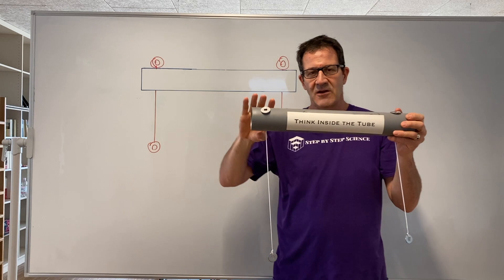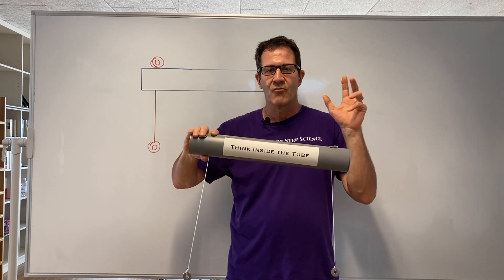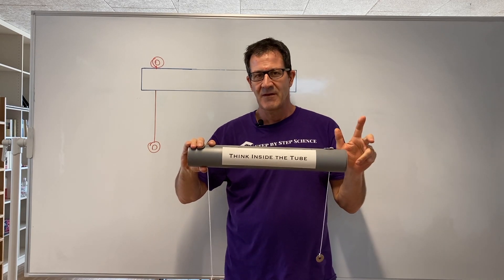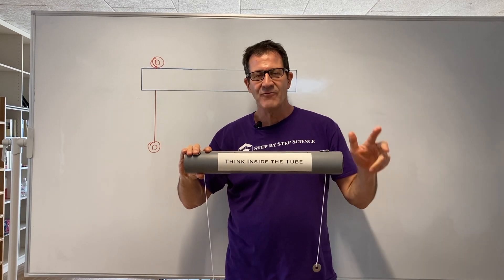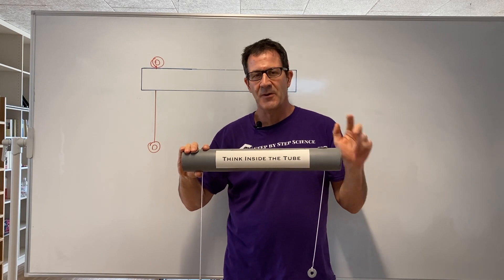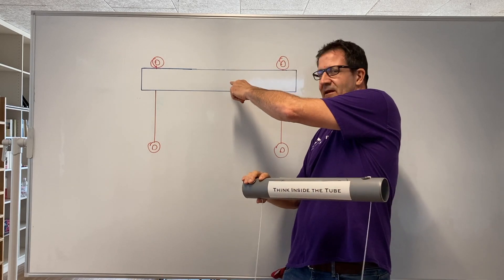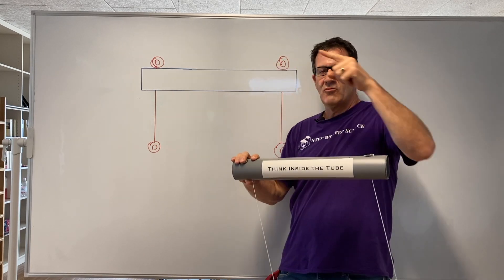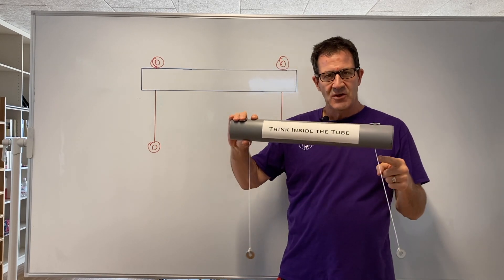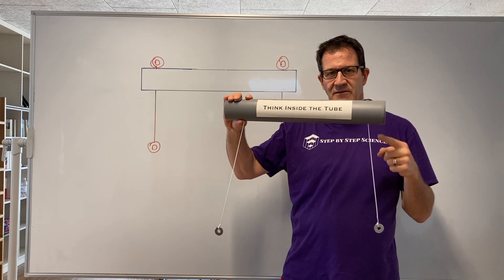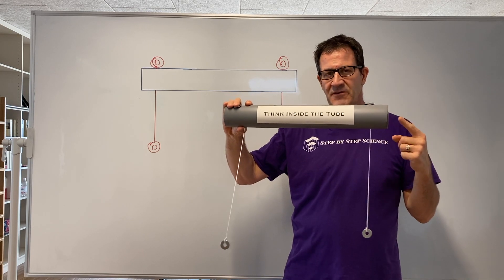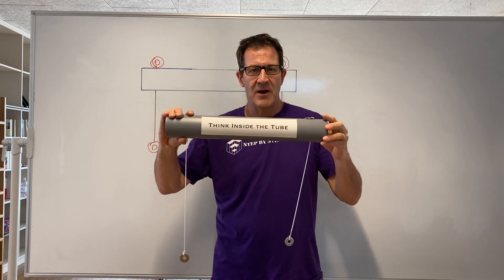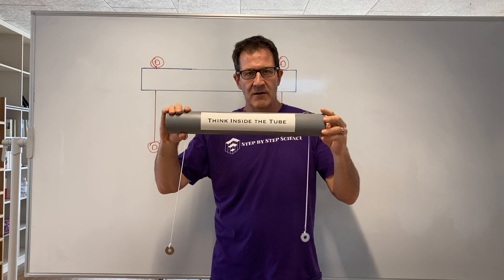Now what I'm going to do — I'm going to do three different experiments. After each experiment, they're going to draw what they think is happening inside the tube, which should match the observations that they make from each experiment. And I'm going to start now with experiment number one.